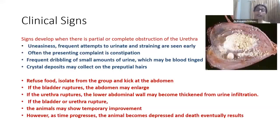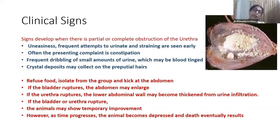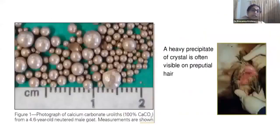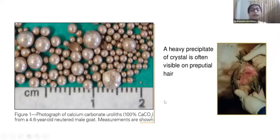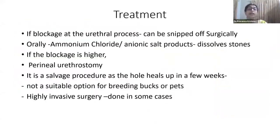Sometimes the bladder may rupture, the abdomen may enlarge, or the urethra ruptures and the lower abdominal wall becomes thickened. When rupture of the bladder or urethra occurs, the animal may show temporary improvement as pain is relieved, but as time progresses the animal becomes more depressed, peritonitis develops, and eventually the animal dies. This is a very severe condition. Shown here is a specimen from a 4.6-year-old male goat, showing the concretions and crystals visible on the preputial hair.